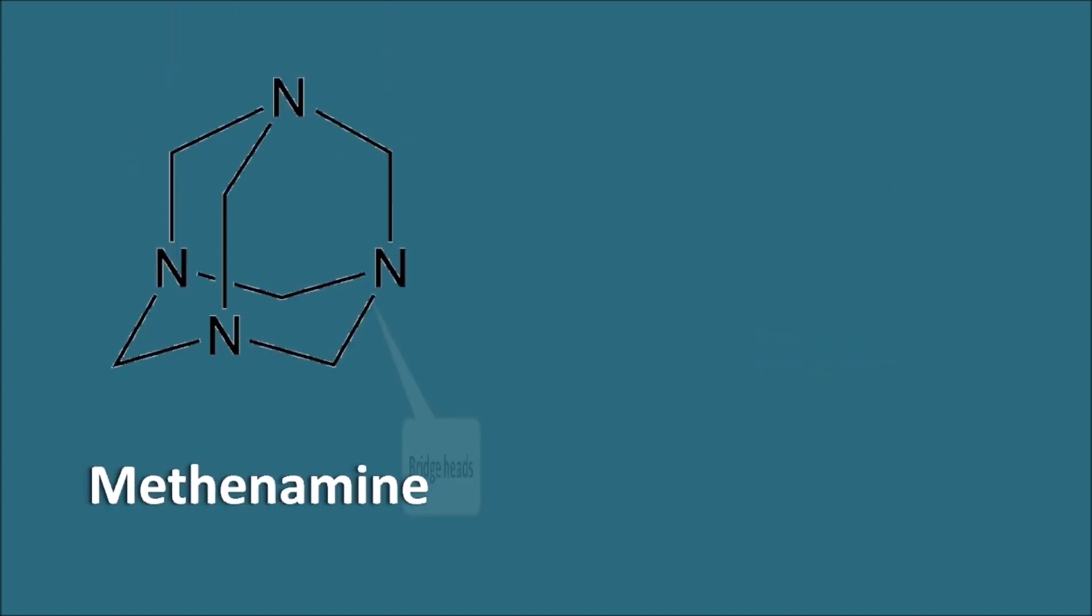So Methenamine here, the nitrogens are acting like the bridge heads which are common to two or more rings. Now we have to start the numbering from any of these bridge heads: one, two, three, four, five, six, seven, and eight. Once we complete the numbering to the main chain, then we have to complete the numbering to the carbons within the bridge.